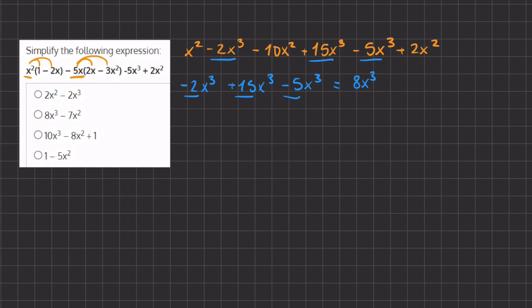Those are the x³ terms combined. Now we're going to do the same with the exponents to the power of 2. We have x squared minus 10x squared plus 2x squared. Simplifying: 1 minus 10 gives us negative 9, plus 2 leaves us with negative 7x squared.